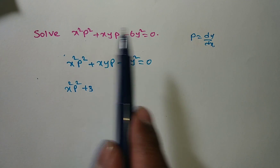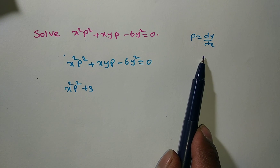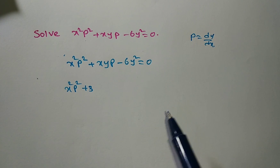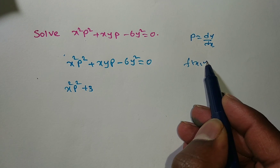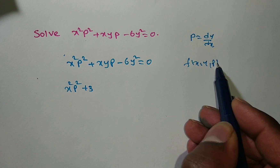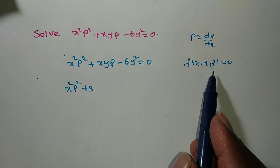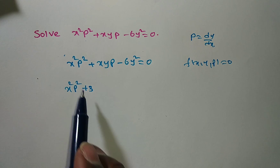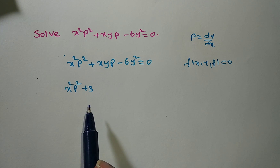Here p means dy by dx, so this is a first order equation. The degree is 2, so this is first order but not first degree.